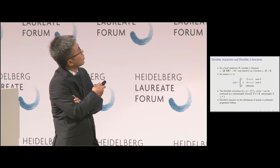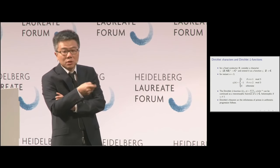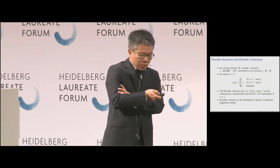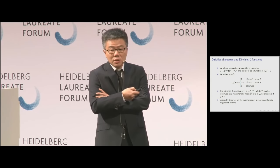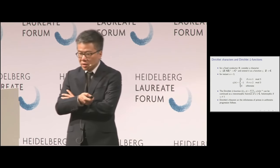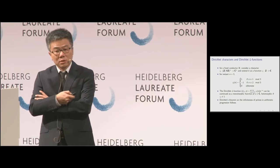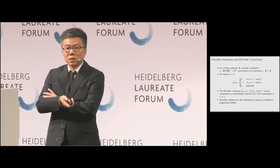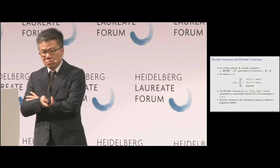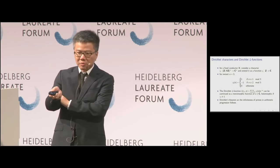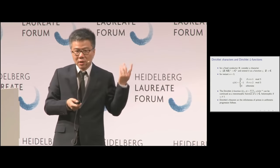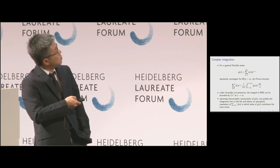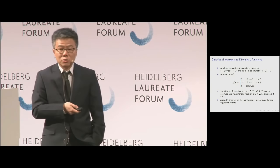Very similarly to the Riemann zeta function, you can prove these Dirichlet L-functions have meromorphic continuations, and — what is quite amazing — they have no pole if the character chi is non-trivial. And that is exactly how Dirichlet proved that there are infinitely many primes in arithmetic progressions. You can count primes in arithmetic progressions using the same trick — applying the Perron formula to these Dirichlet L-functions.